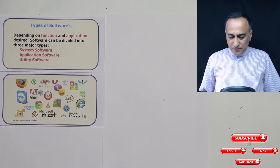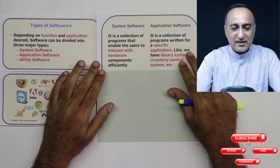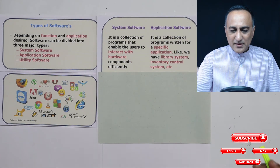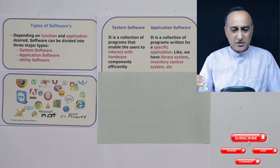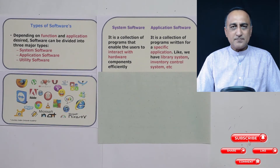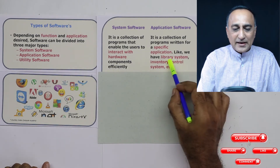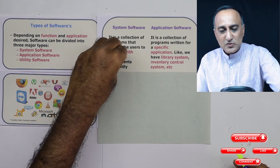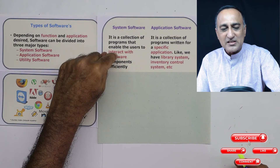Now let's discuss the differences between system software and application software point by point. System software is a collection of one or more programs or instructions that help the user deal with hardware components very effectively. Application software is written for specific real-world applications like library management, inventory control, or billing software. System software has the closest relationship with hardware, and since application software cannot talk directly to the hardware, the system software does that task.